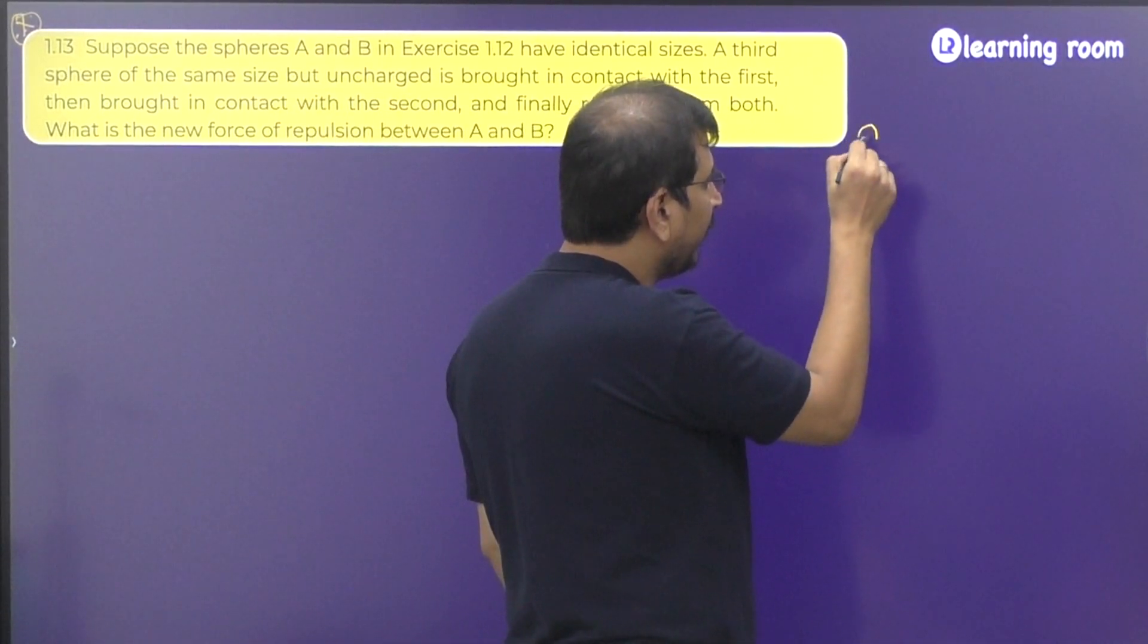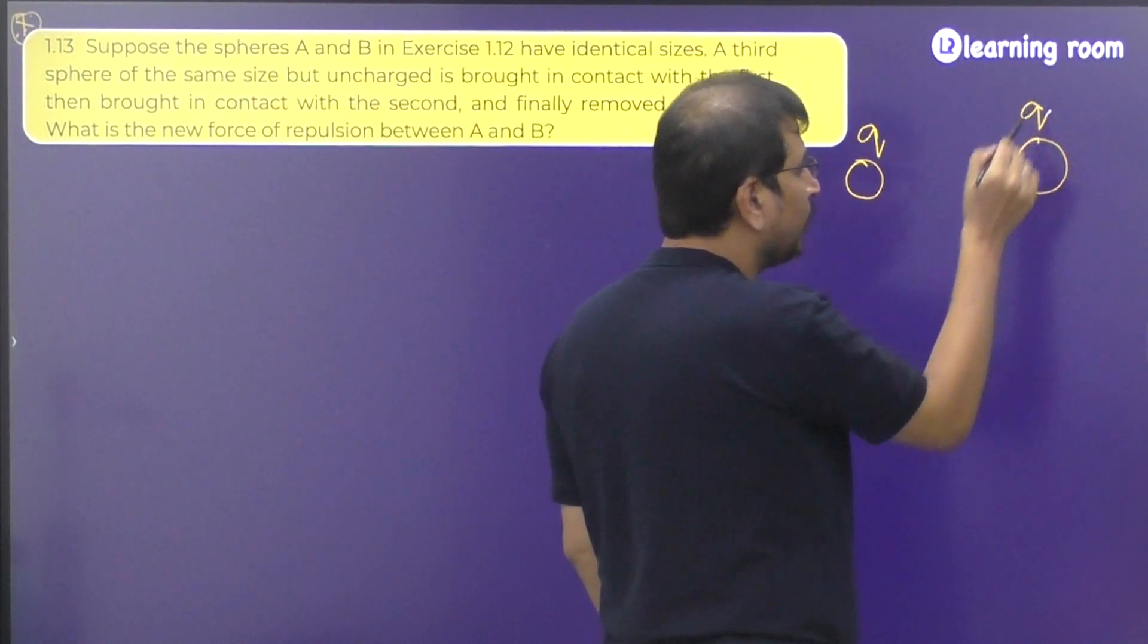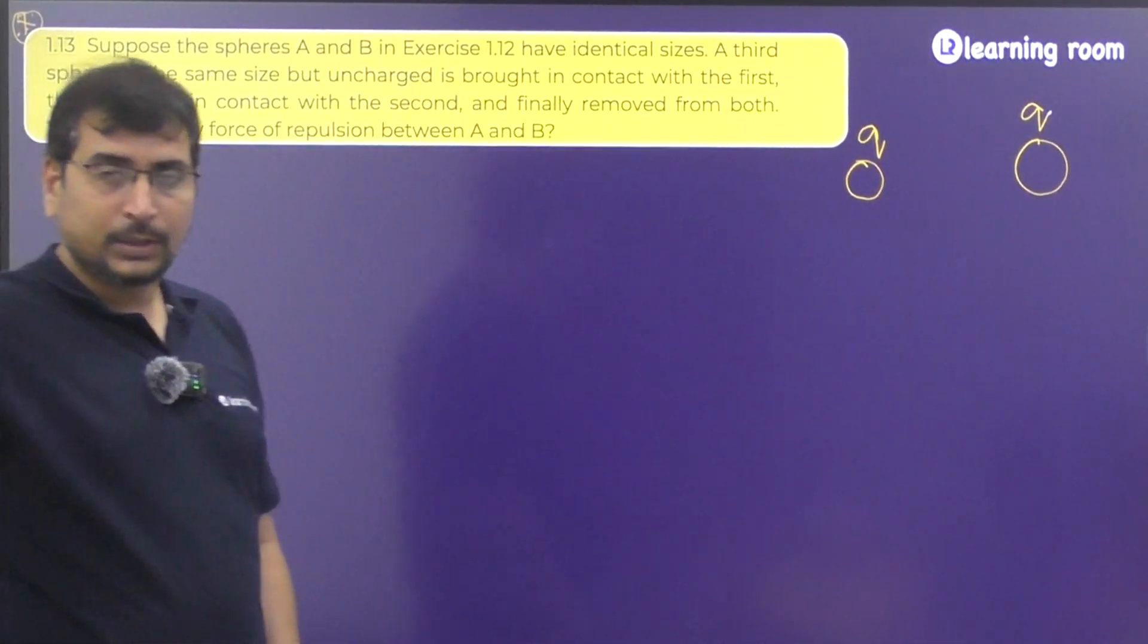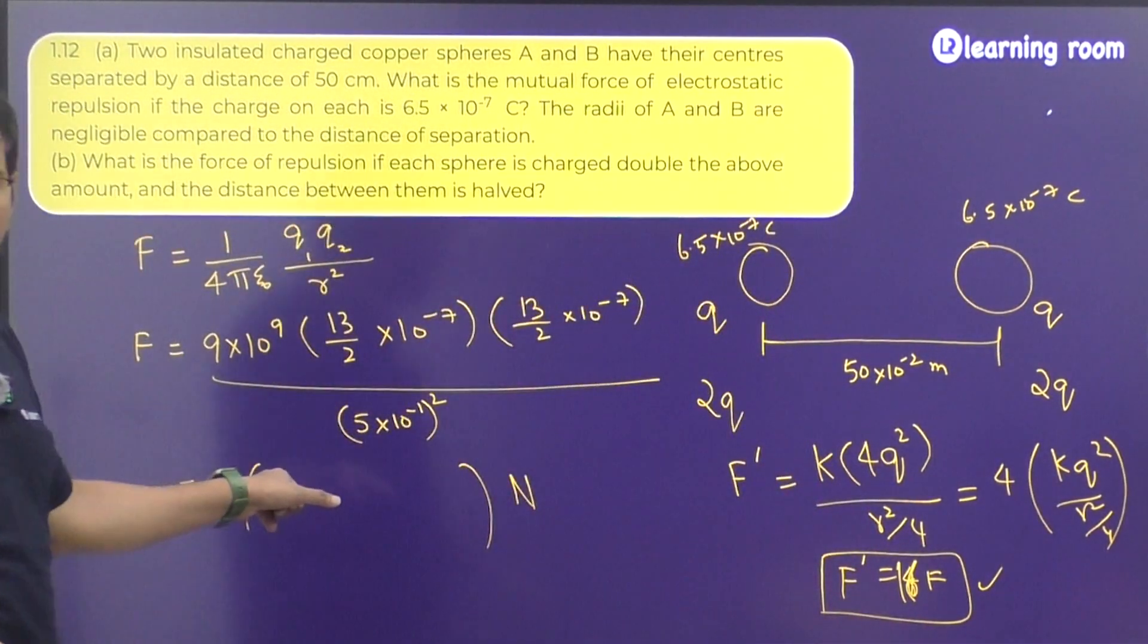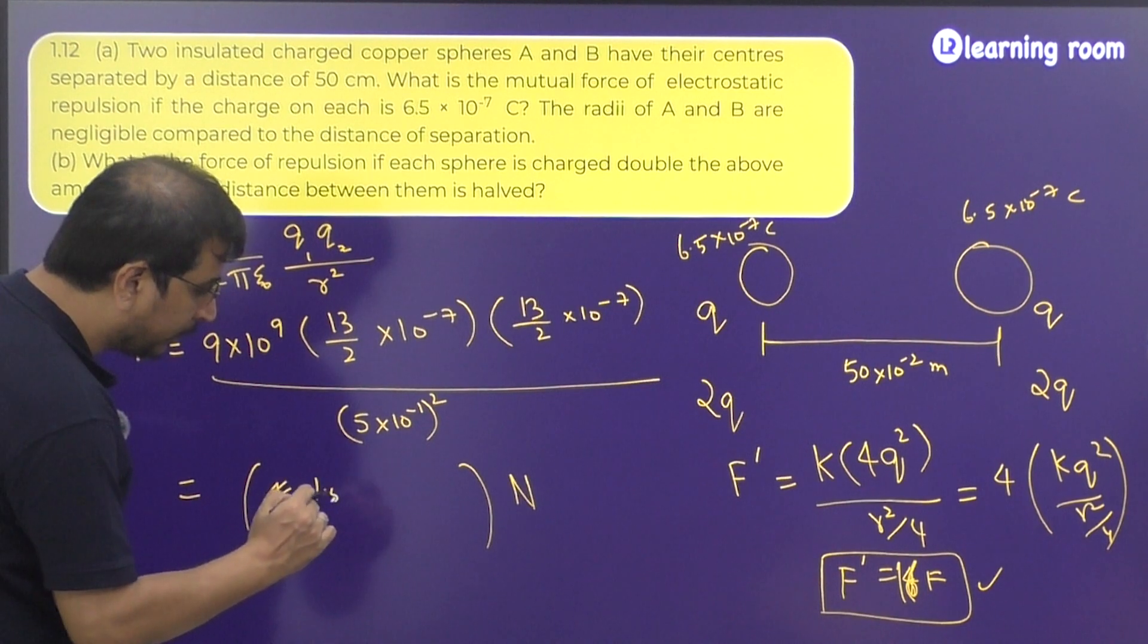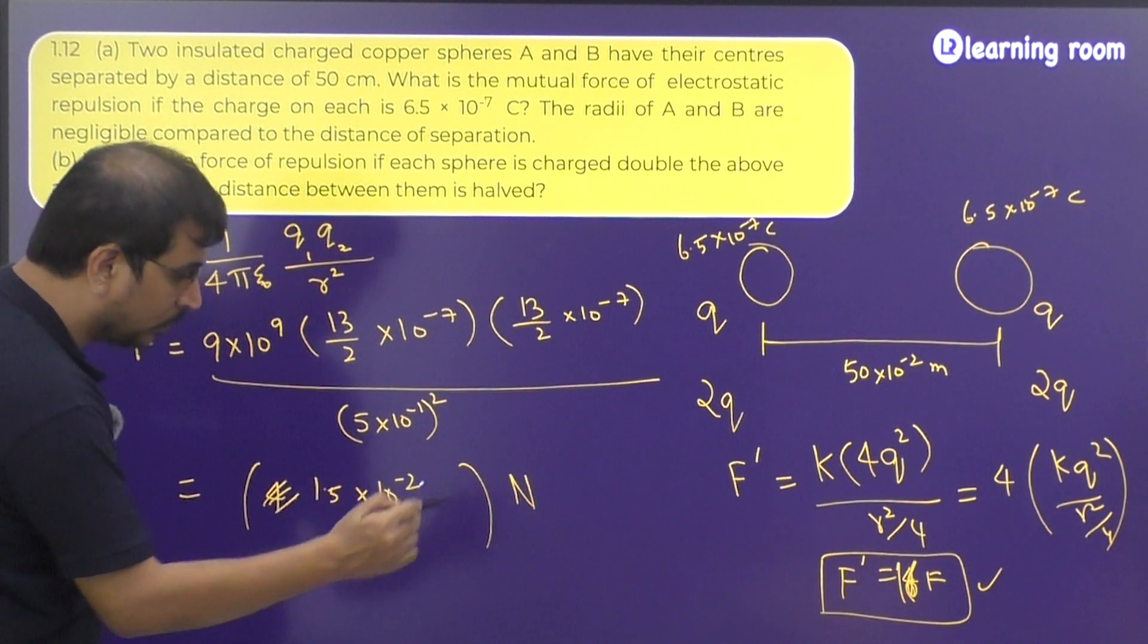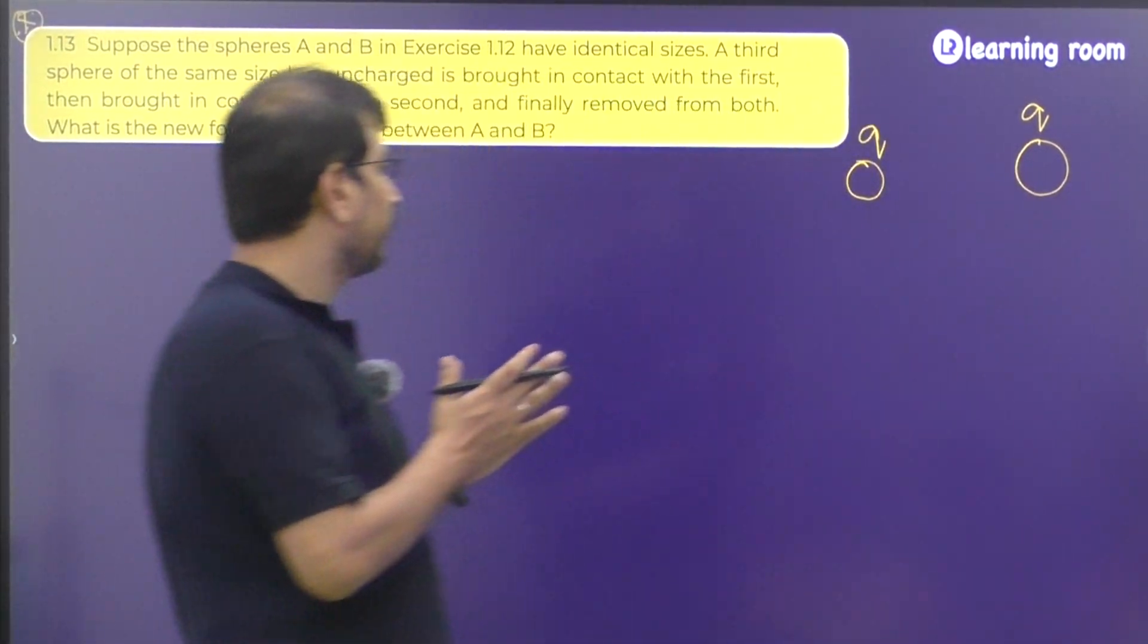So initially if I take the charge to be Q here and if I take the charge to be Q here, first of all tell me what is the value that was obtained in the previous case. What is this value? 4.5 into 1.5 into minus. Okay, let us remember this.